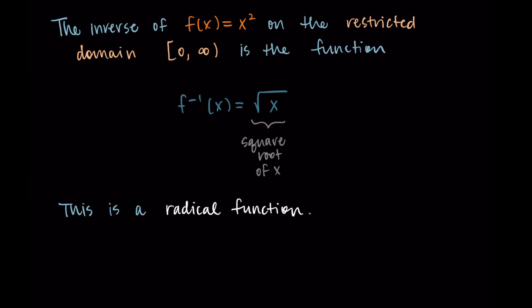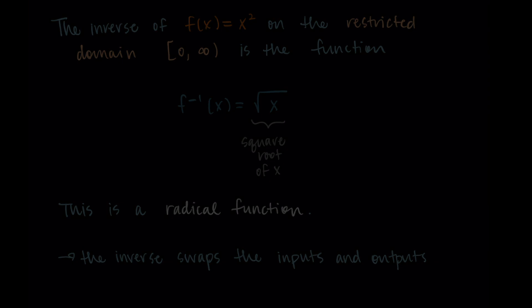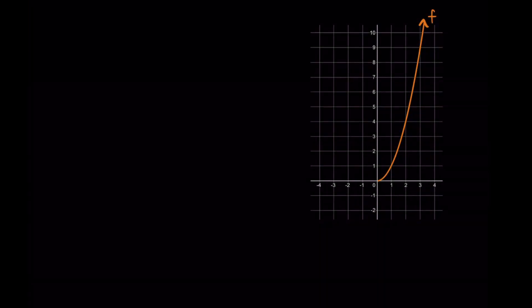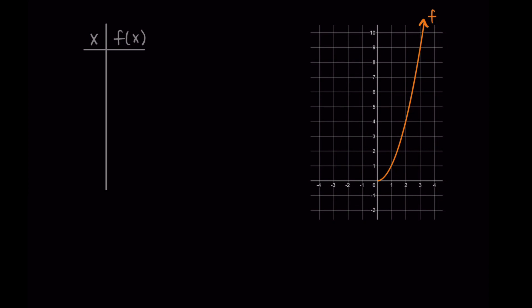In the previous video we showed that this is the inverse for x squared by doing the composition of f and f inverse. But I want to show you a second way by simply swapping the inputs and the outputs. Remember, inverse functions take the outputs of the original and tell us which inputs they came from. It's effectively swapping the input and the output values. For my original function on this restricted domain, we have zero zero, we have one one, we have two four, three nine, and then four and sixteen.